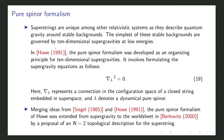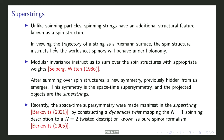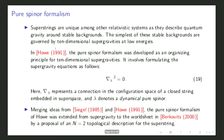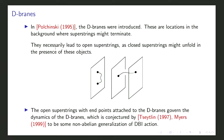The pure spinor formalism for the worldsheet was developed by Berkovits in 2000, proposing an N=2 topological description. In 2000 he used a more complicated ad hoc description, and only in 2005 did he organize it into the N=2 twisted description — which is why it can be a little confusing.